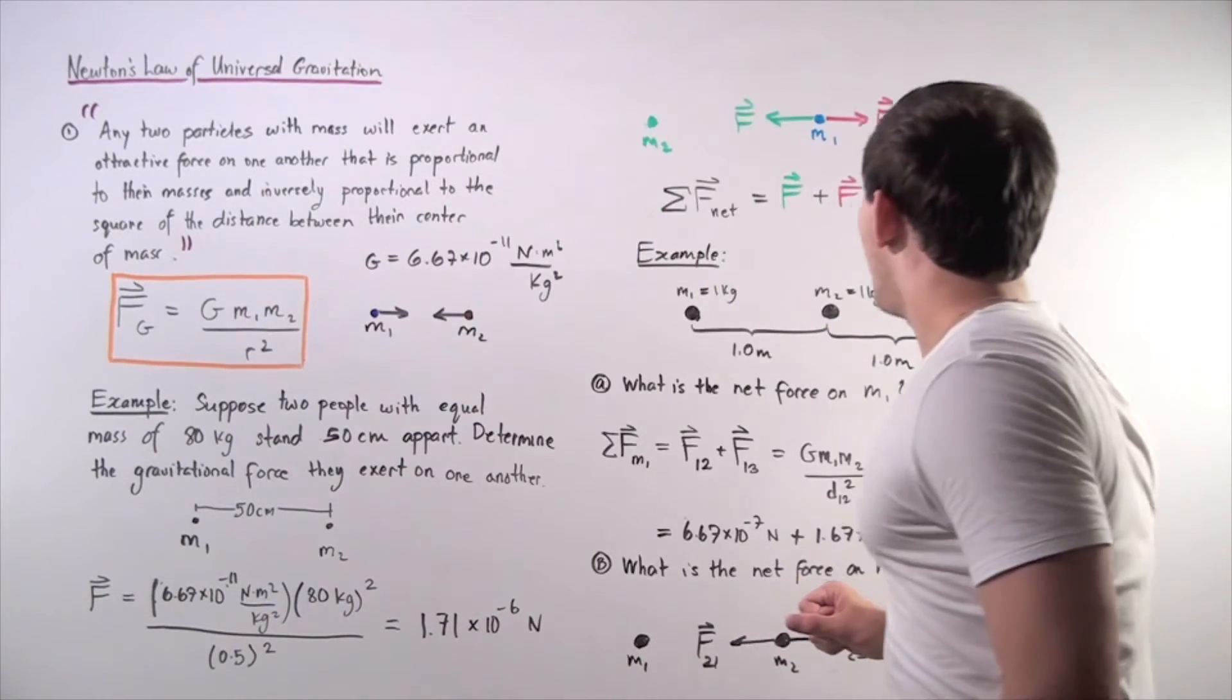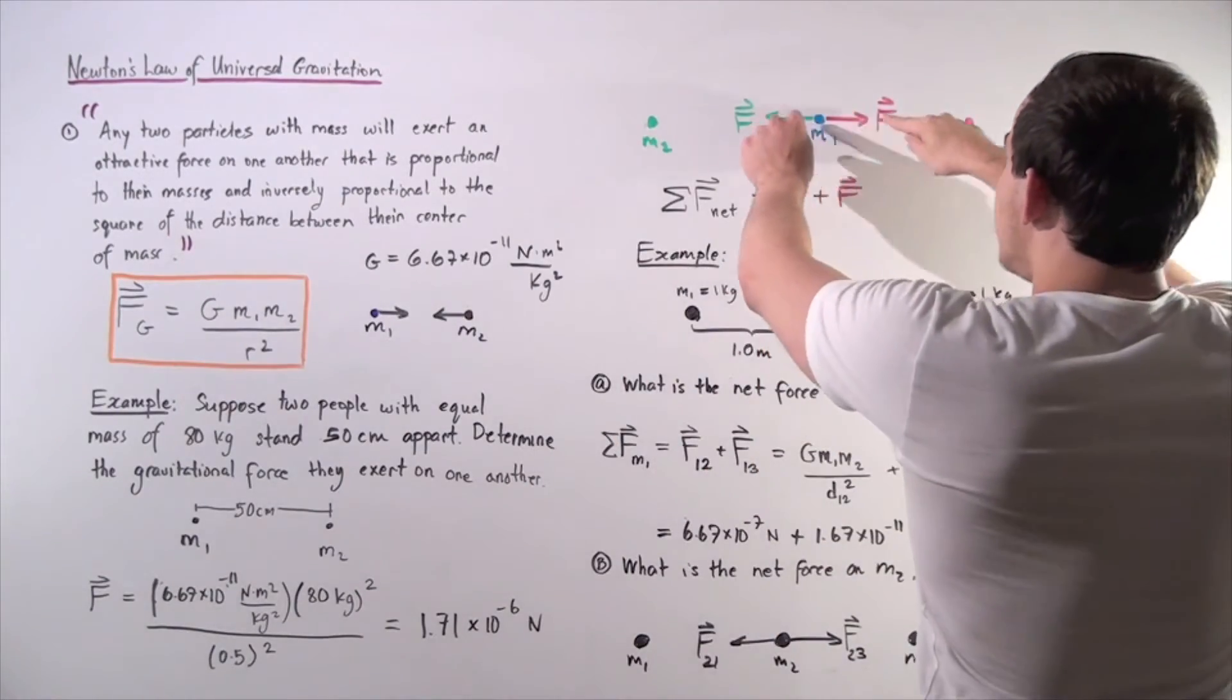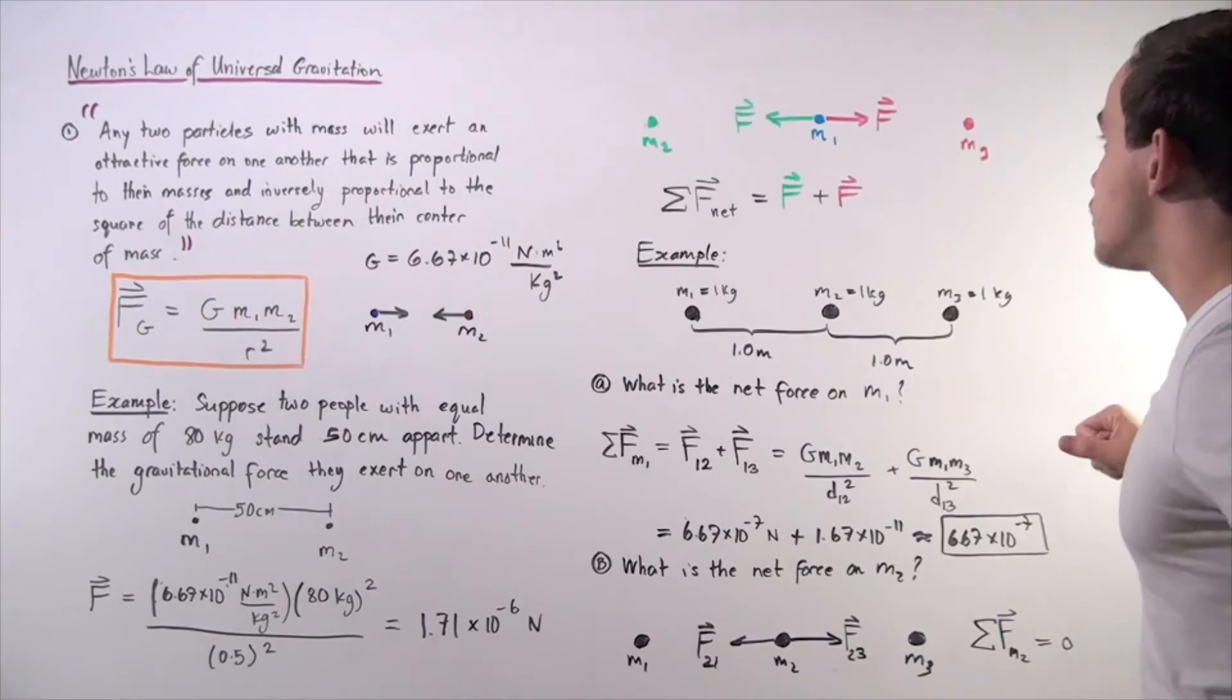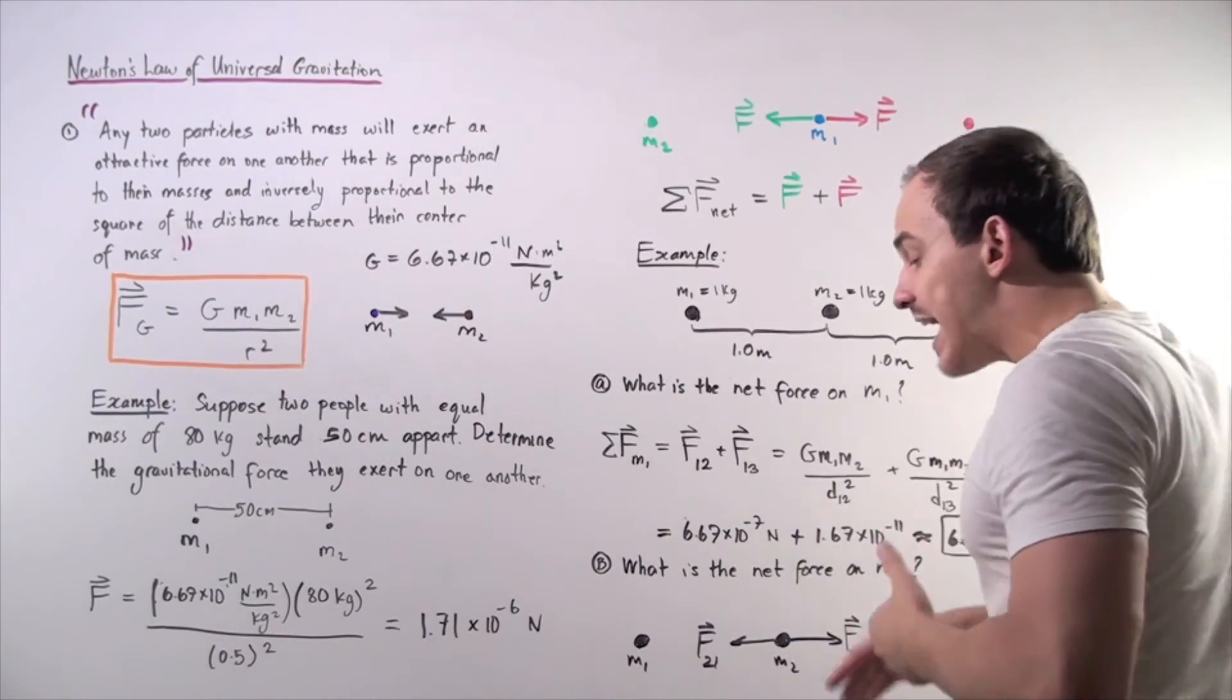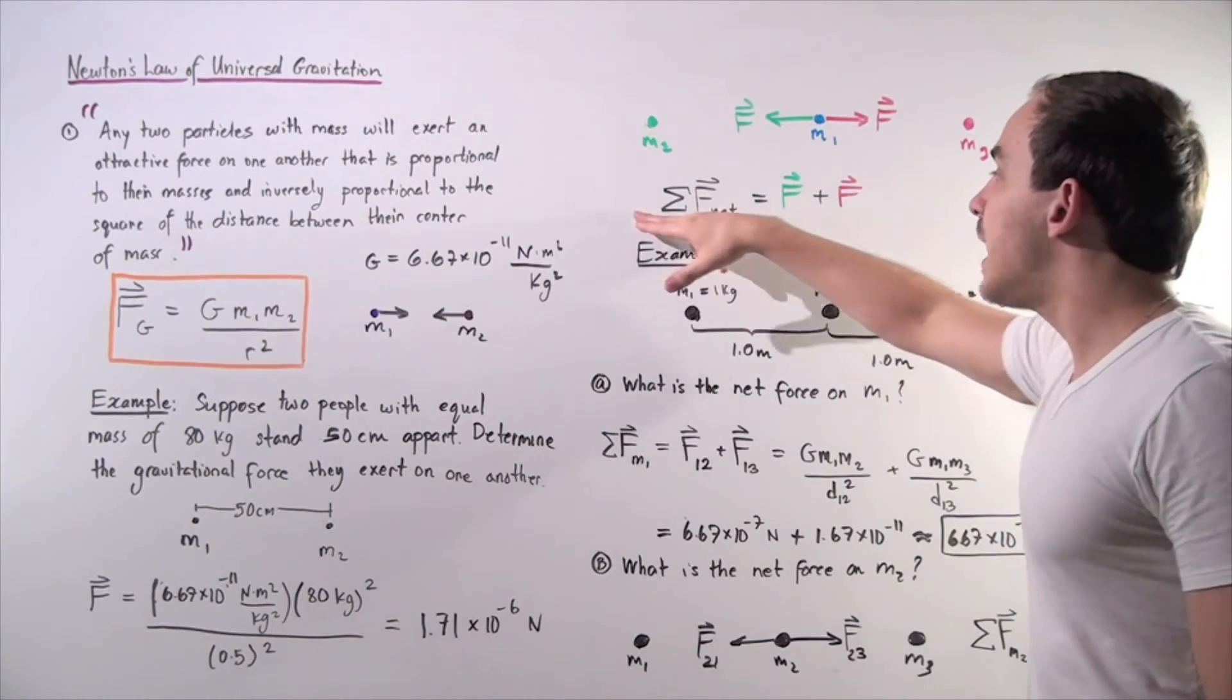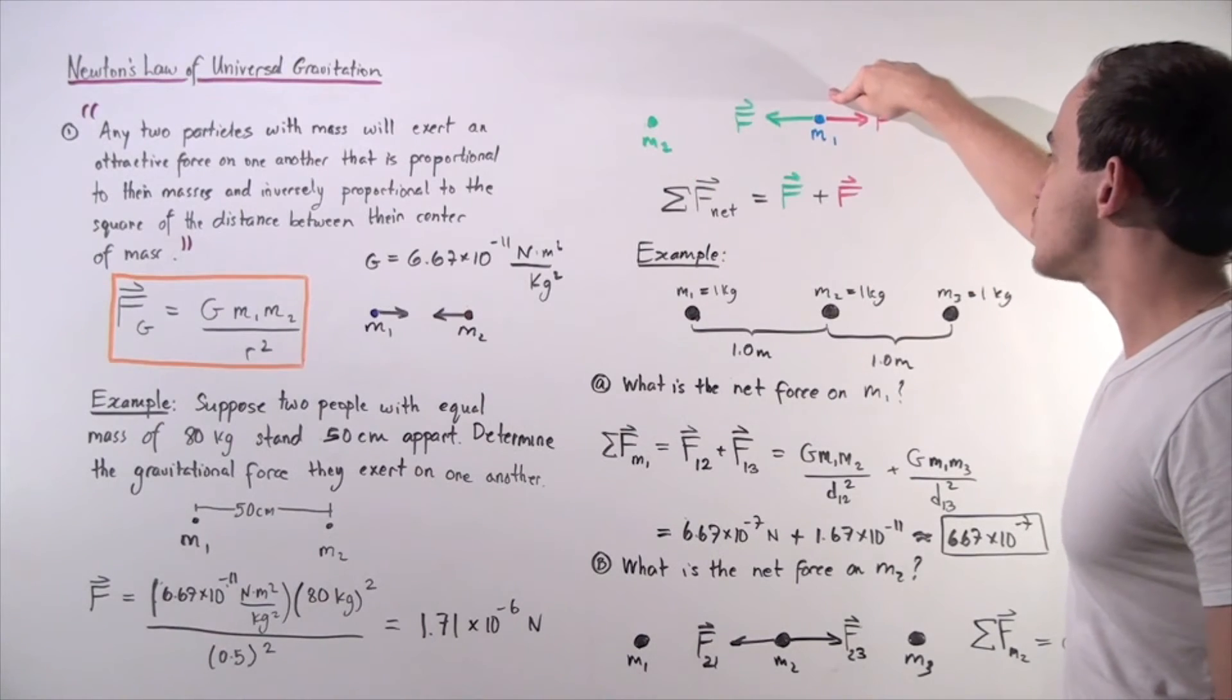Now, let's suppose we have the following: mass one, and now we have not one mass but two masses lying along the same axis. Let's suppose I want to calculate the force that mass one feels due to these two masses. Well, now because I have more than one mass and because force is a vector, that means to find my net force on mass one, I simply sum up the two forces acting on mass one.